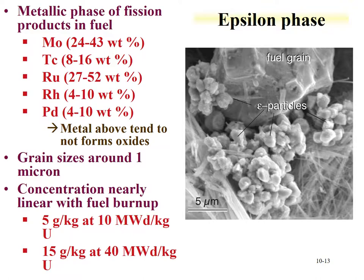Metallic phases can also form — these are called epsilon phases, composed of molybdenum, technetium, ruthenium, rhodium, and palladium. These elements tend not to form oxides, so with limited oxygen available from UO2 or UO2+x, we expect formation of these metallic phases. The grain size of epsilon phases is generally around one micron, and their concentrations are nearly linear with burn-up: about 5 grams per kilogram uranium at 10 megawatt days per kilogram uranium, increasing to 15 grams per kilogram at 40 megawatt days per kilogram uranium. These phases form in the boundaries between fuel grains.